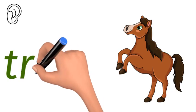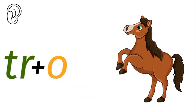Trot. The horse likes to trot. What sounds do we hear in the word trot? It starts with a consonant blend, a T and an R. Set together: TR.